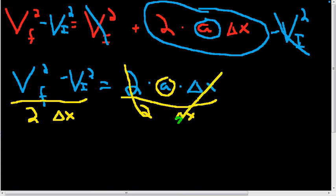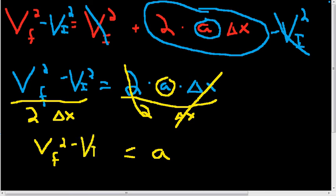The twos cancel, the delta x cancels. All we're left with here on the right is the acceleration, or A. And on the left, everything's fine the way it is: vf squared minus vi squared, all over 2 delta x. And there we have it — our kinematics equation, which we started with, is now solved for the variable A.